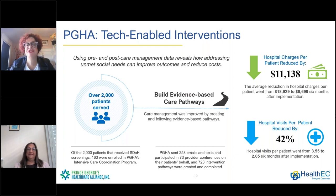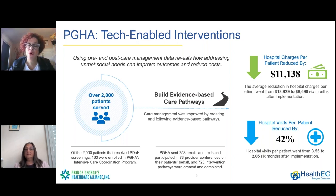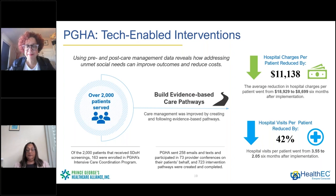Of these 163 patients, we did a pre and post analysis — how many hospital visits did they have six months prior to enrollment in our intensive care coordination program compared to six months post enrollment. We found on average an $11,000 decrease in hospital charges per patient, and a reduction of 42% of hospital visits per patient. It's important to have a system that allows you to document the work you do, track the interventions, and report the outcomes so you can understand the impact and present that to funders and other organizations, validating the effect of the work.